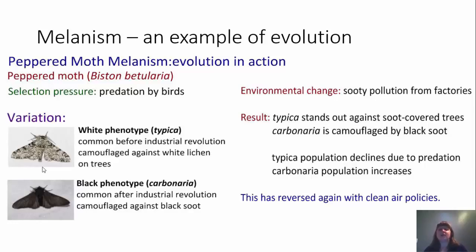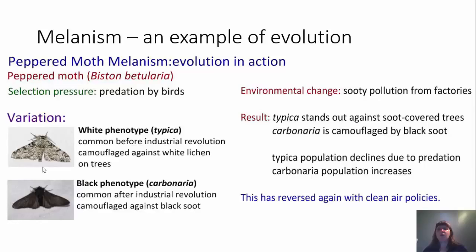Over time, clean air policies were introduced, and we've been able to observe the reversal of this evolution in action through changes in peppered moth melanism. Before the Industrial Revolution: many white phenotype moths, very few black. During the Industrial Revolution: a decrease in white phenotype and an increase in black due to soot pollution. With clean air policies controlling pollution, we saw another shift — a decrease in the black phenotype and an increase in the white phenotype, returning to the pre-Industrial Revolution pattern.